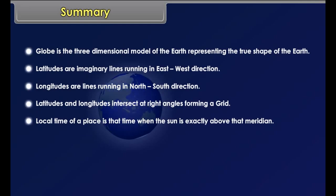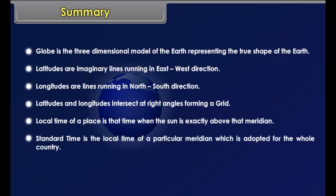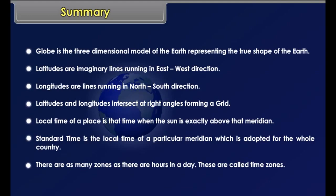Summary: A globe is the three-dimensional model of the earth representing the true shape of the earth. Latitudes are imaginary lines running in east-west direction. Latitudes and longitudes intersect at right angles forming a grid. Local time of a place is that time when the sun is exactly above that meridian. Standard time is the local time of a particular meridian which is adopted for the whole country. There are 24 time zones — one for each hour in a day — called time zones.